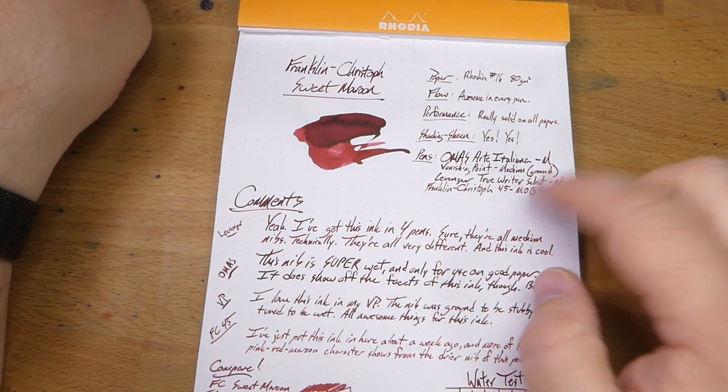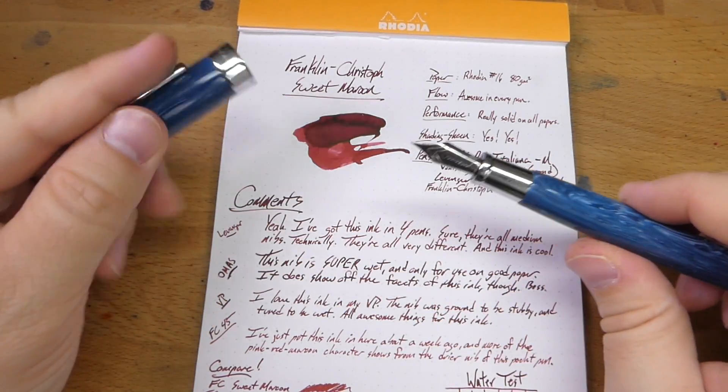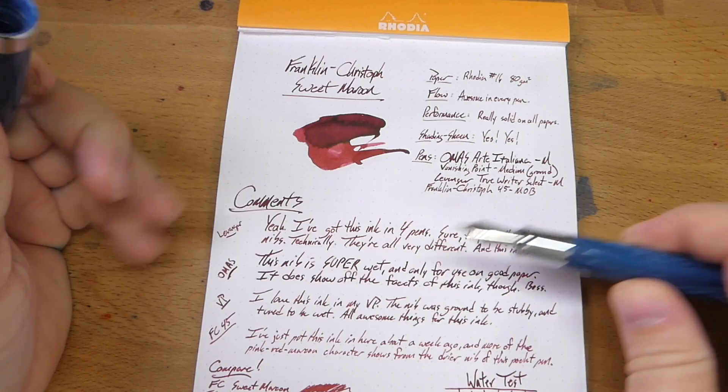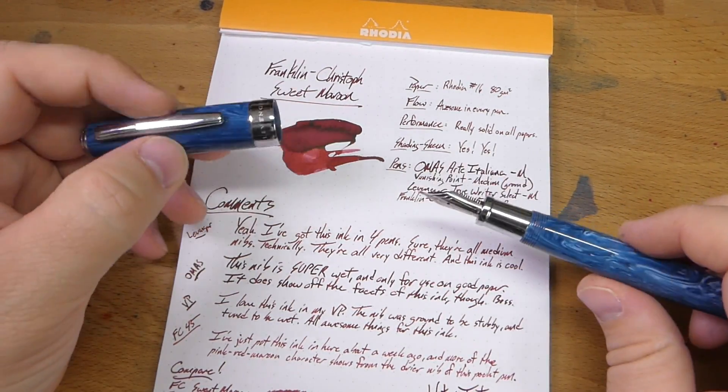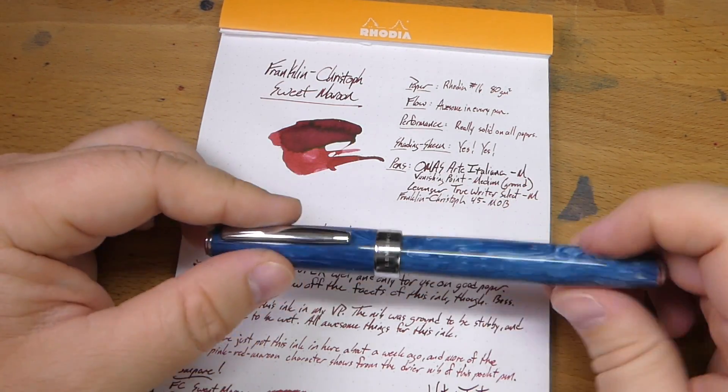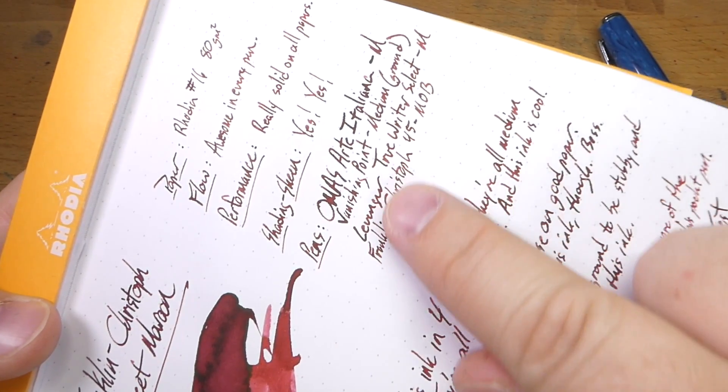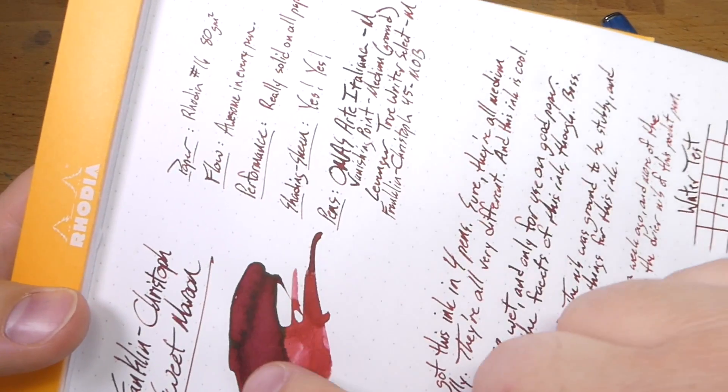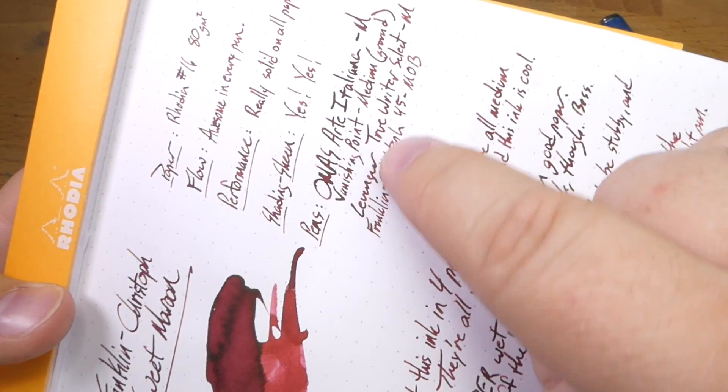Next up is this one, a Levenger True Writer Select. This is also a medium nib. In fact, all of these are medium nibs, all very different sorts of medium nibs. This is sort of medium-wet, very reliable, very smooth nib. I dig this one a lot. You get a really nice tone from this ink, lots of shading. You get shades from this deep maroon out to a little bit of pink.